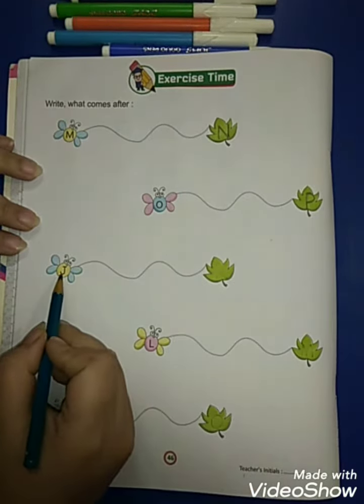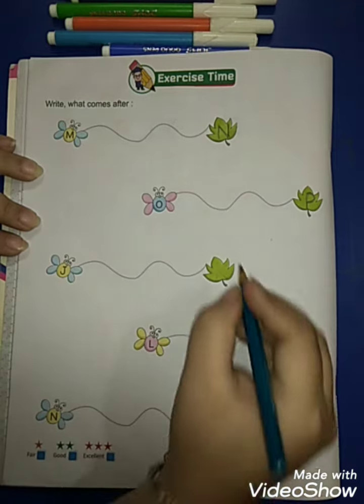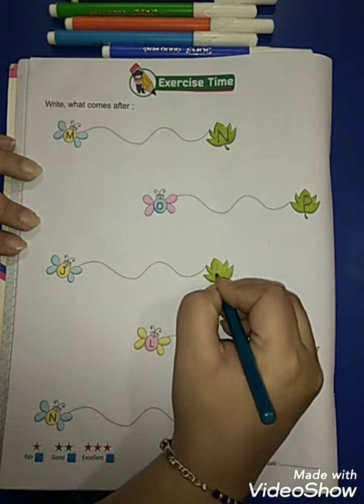Now which letter is this? J. So what comes after J? K. So I will write K like this.